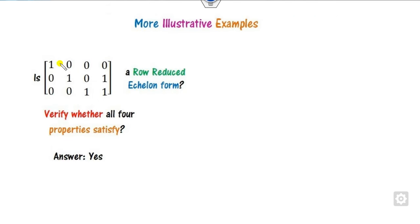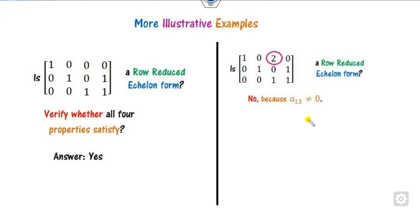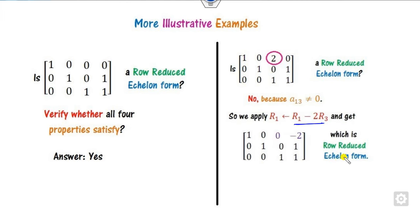Is this a row reduced echelon form? Check: the first non-zero element is 1, above and below values are 0 — that is fine — and the indexing is preserved. So the answer is yes. For another matrix where the first non-zero element's column has a non-zero entry above it, use elementary row operations to zero that entry, making it row reduced.